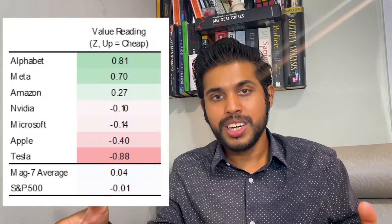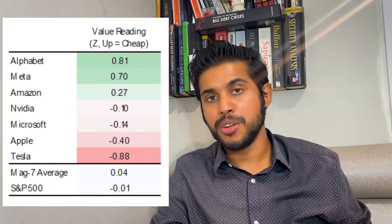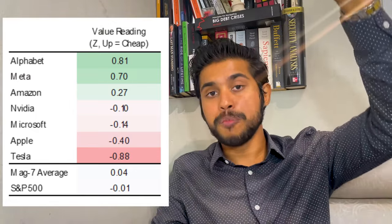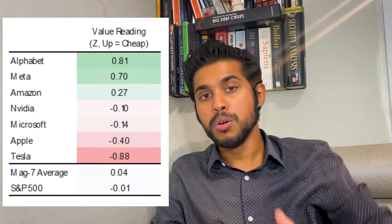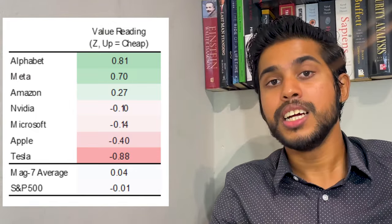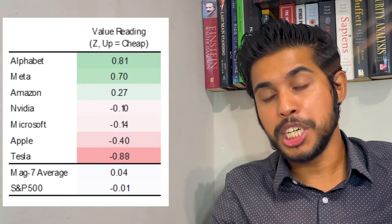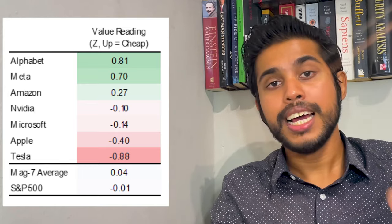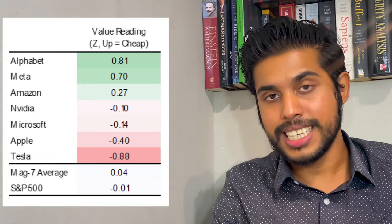In that article there was a chart showing the top seven companies in the United States — the Magnificent Seven — ranking them from cheapest to most overvalued. We can see on this list that Google, according to him, is the cheapest one, followed by Meta, and the most expensive one is Tesla. To understand this chart we first need to understand what Ray Dalio means by a bubble.